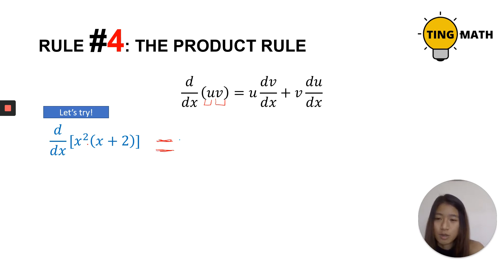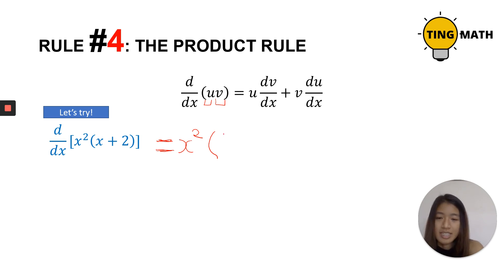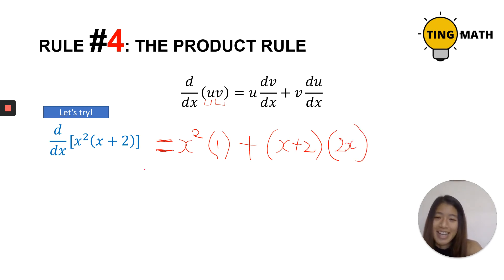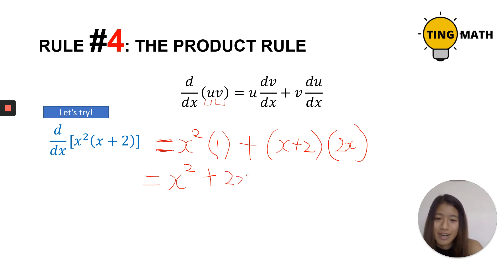We have x squared multiplied by (x plus 2). Let's choose one partner — let's leave x squared normal and differentiate (x plus 2), which gives us 1. Then it's the other term's turn: we copy (x plus 2) normally and differentiate x squared, which gives 2x. Simplifying: x squared times 1 plus (x plus 2) times 2x gives 2x squared plus 2x squared plus 4x, which equals 3x squared plus 4x.